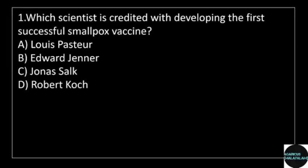1st question: Which scientist is credited with developing the first successful smallpox vaccine? Answer options: option A, Louis Pasteur; option B, Edward Jenner; option C, Jonas Salk; option D, Robert Koch.